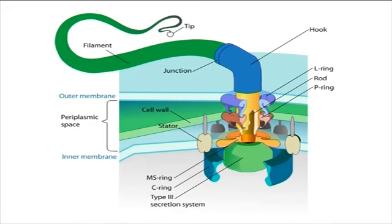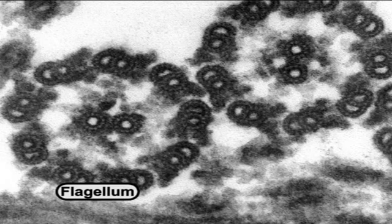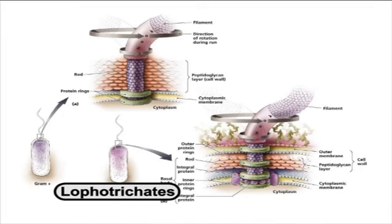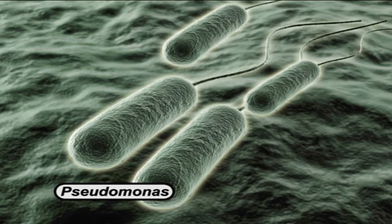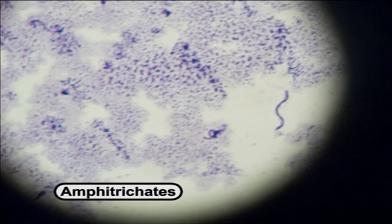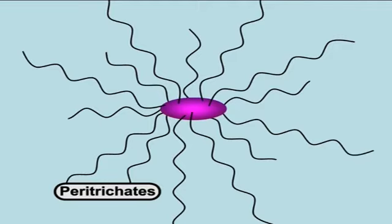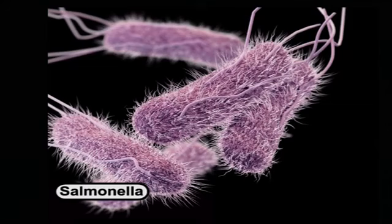Flagella are long filamentous-like structures which help in creeping and swimming of bacteria. Flagella are arranged in four different ways. It may be only one flagellum at one end of the cell, like in monotrichates, for example Vibrio; or more than one at one end, known as lophotrichates, for example Pseudomonas. Many flagella at both ends, like amphitrichates, for example Spirillum; or many flagella around the cell in peritrichates, for example Salmonella, as shown in the figure.